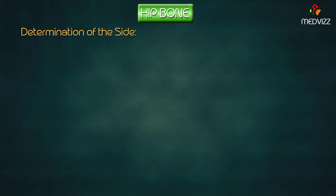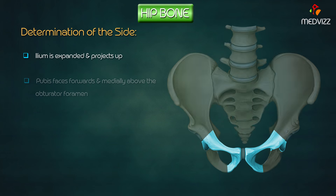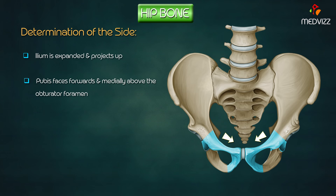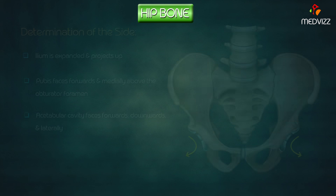For determination of the side: the ilium is expanded and projects upwards; the pubis faces forwards and medially above the obturator foramen; and the acetabular cavity faces forwards, downwards, and laterally.